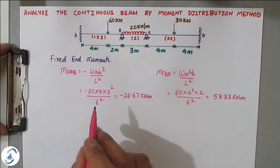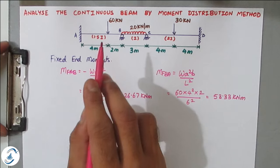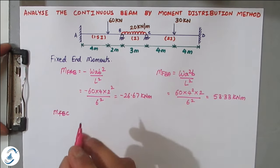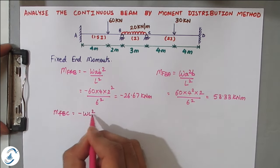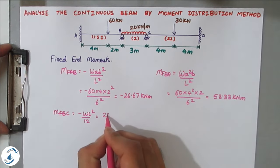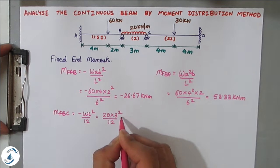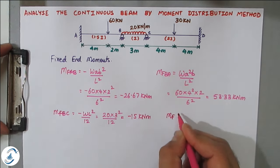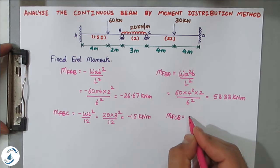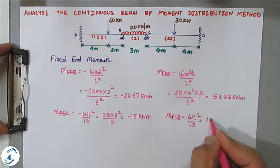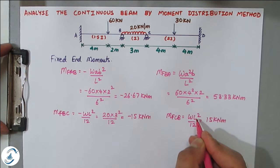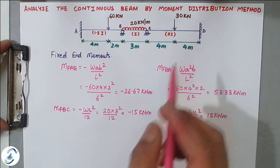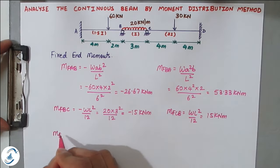MF_AB and MF_BA are not equal because the point load is not at the center. Next, for span BC with UDL, the fixed end moment formula is ±WL²/12. With W = 20 kN/m and L = 3 m: MF_BC = −15 kN·m and MF_CB = +15 kN·m. For span CD, the point load acts at the center, so the formula is ±WL/8 for both ends — only the sign changes.